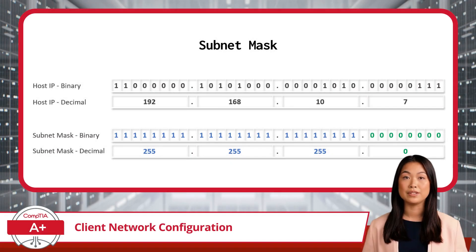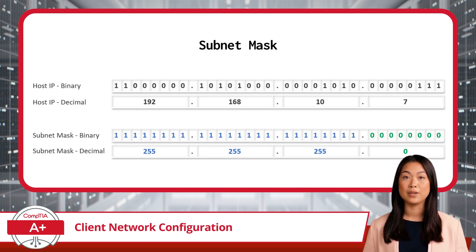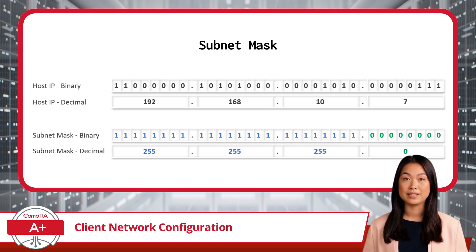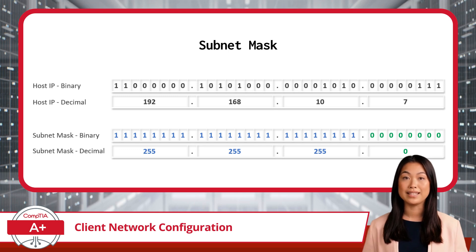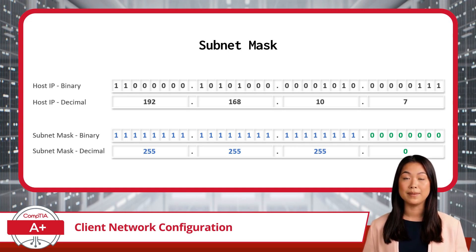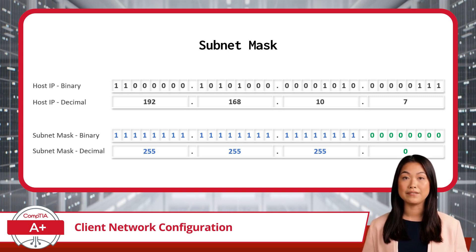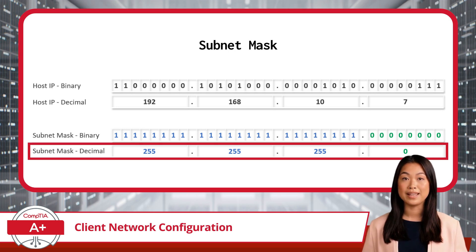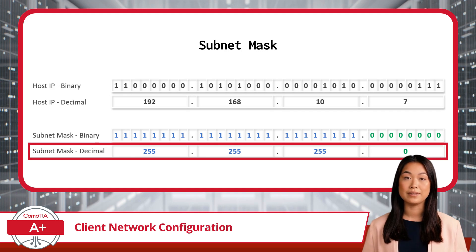A subnet mask is used to divide an IP network into smaller subnetworks, or subnets. The process of subnetting improves network performance and security by segmenting larger networks into smaller, more manageable subnets, allowing for better control of network traffic. Think of subnetting as creating VIP sections in your network club, keeping the crowds manageable and the party going smoothly. For now, just have an idea of what a subnet is and what a subnet mask might look like — leave the binary math for later.